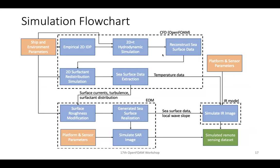This hydrodynamic simulation is just one step in a larger pipeline for generating remote sensing data. The full pipeline begins with 2D initial data plane, performs the hydrodynamic simulation, reconstructs surface data, then feeds into additional models — some within OpenFOAM, some external — ultimately generating infrared and synthetic aperture radar (SAR) images. OpenFOAM tools are used to extract all necessary data, which is fed into different models.